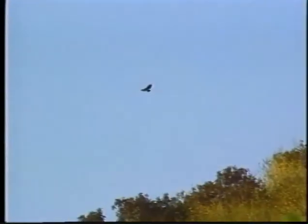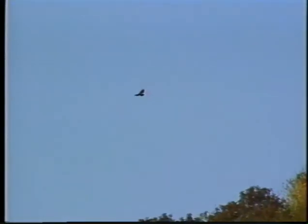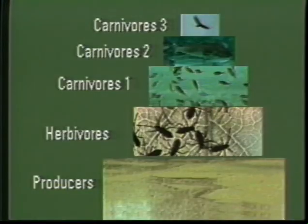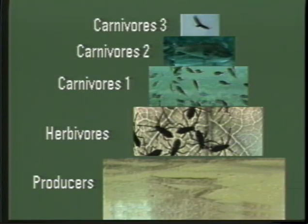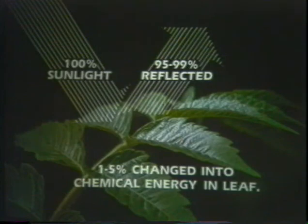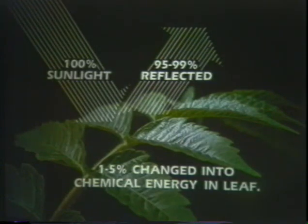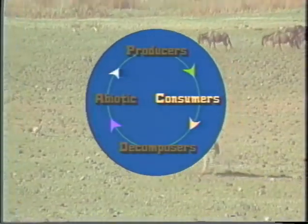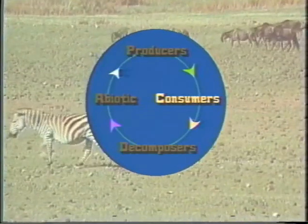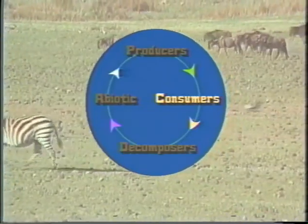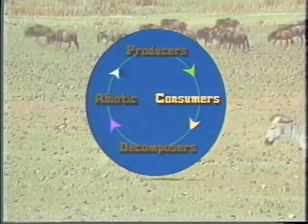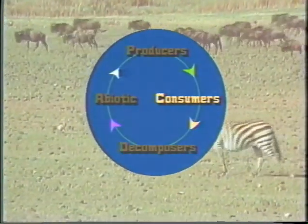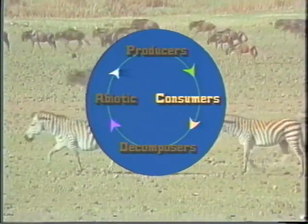Each consumer may be only one link in what is called a food chain. The producers, we pointed out, are able to use only a few percent of the incoming sunlight energy. The consumers, it turns out, can do a little better in efficiency — they can convert about ten percent of the producer food into consumer life energy.